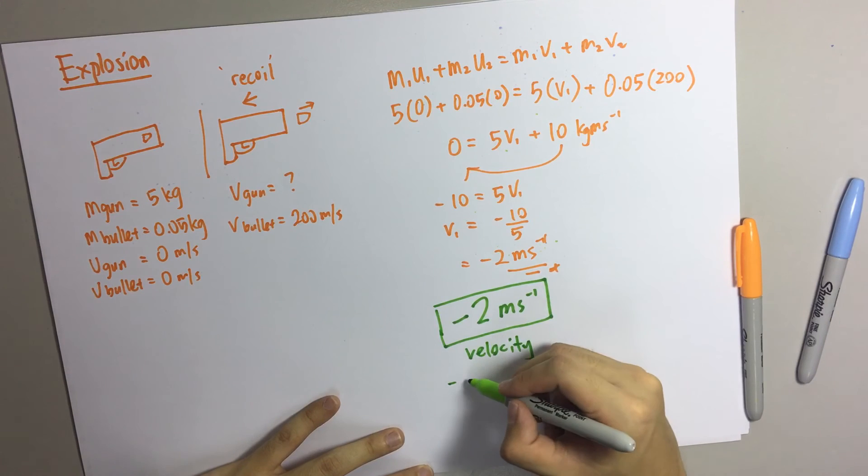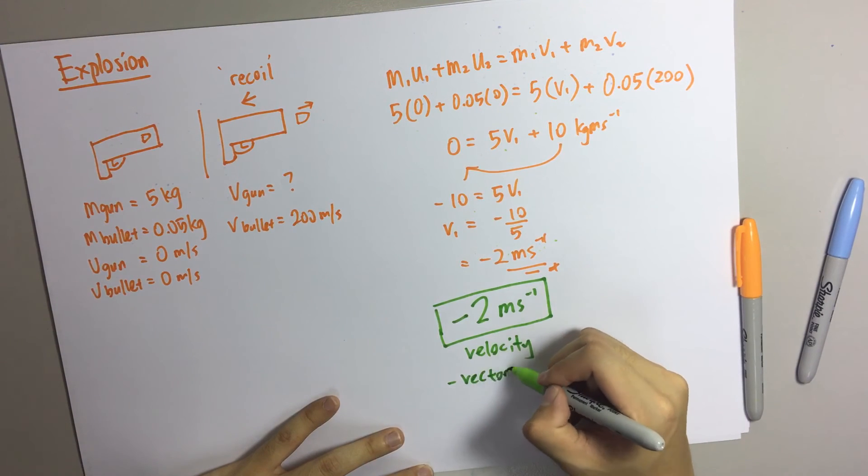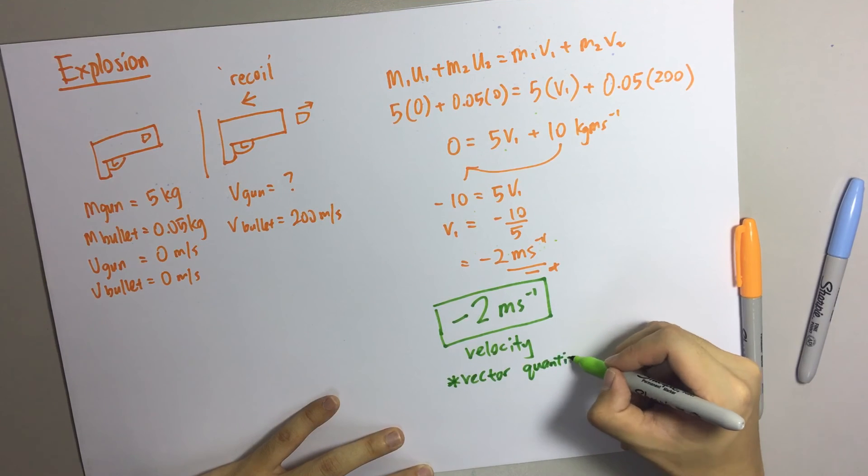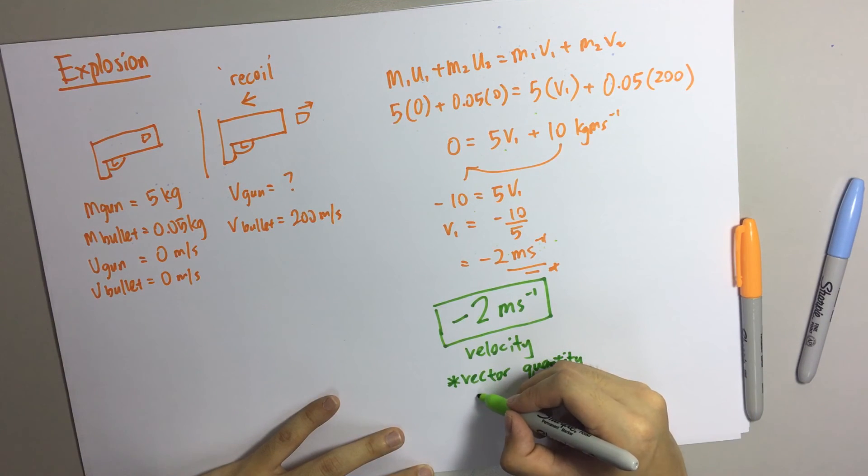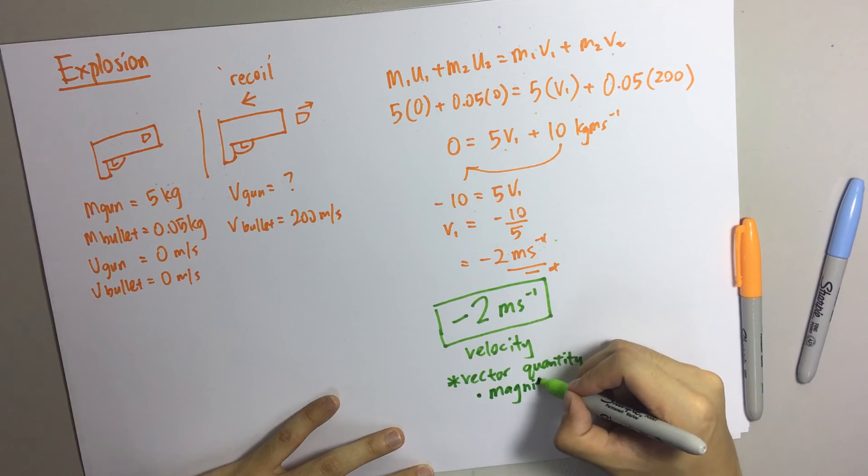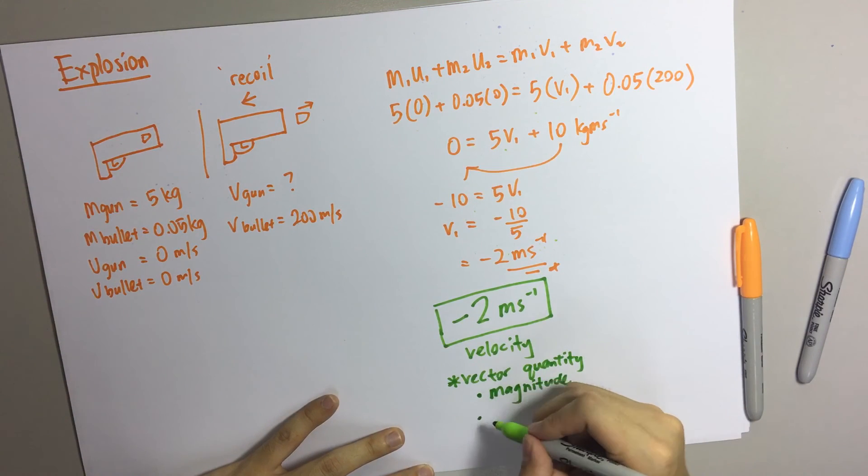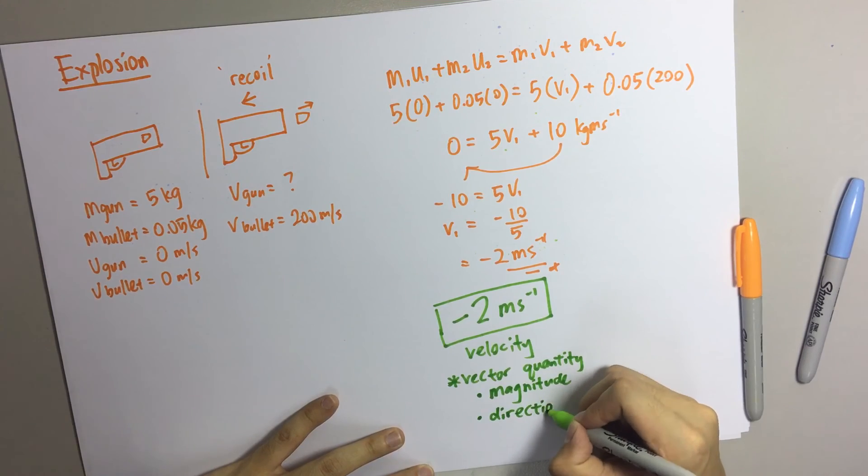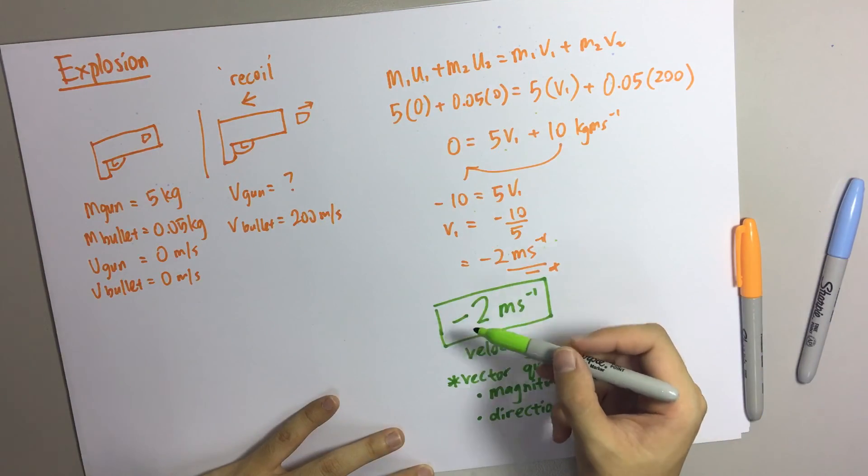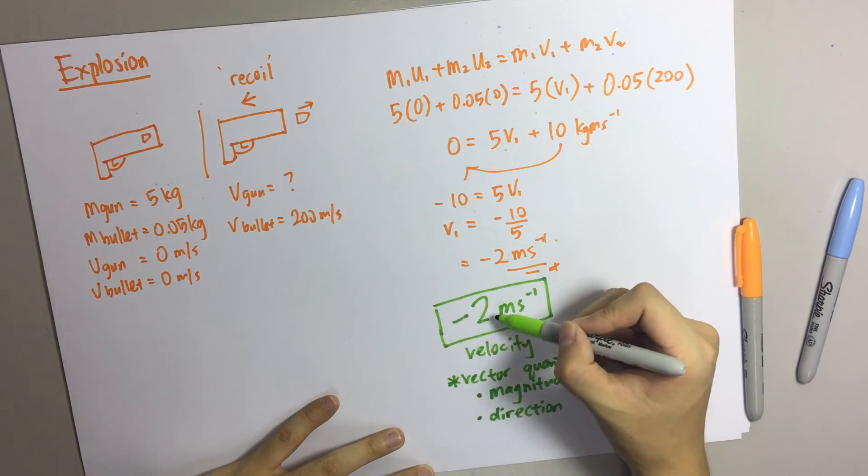Because this is velocity. Velocity is a vector quantity. What does it mean by vector quantity? It means that they have magnitude and direction. So when the object is moving to the left, you will have a negative value. But if you move to the right, it will be positive value.